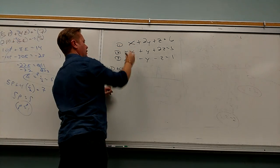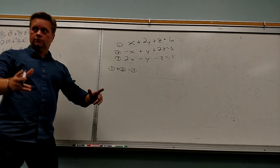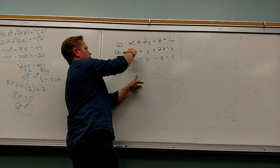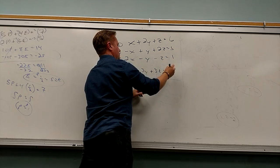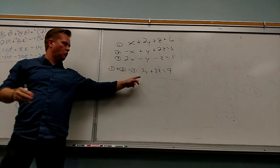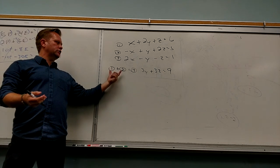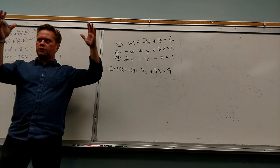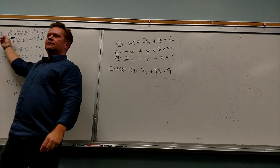If I add equation one and equation two, I get 3Y plus 3Z equals 9. That looks nice. Now I could use this method if I just had one more equation with only Y and Z in it. So I kill X one more time, some other way. Then I'll have another equation with just Y and Z. If I kill the same letter twice, I'm back to a two-variable system.